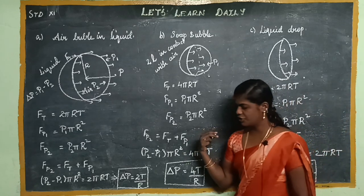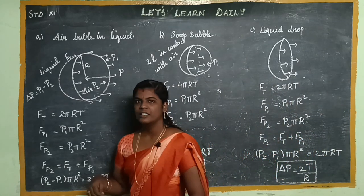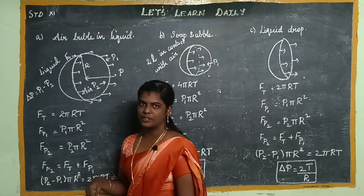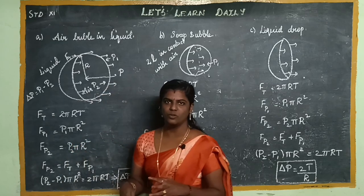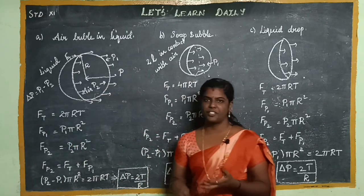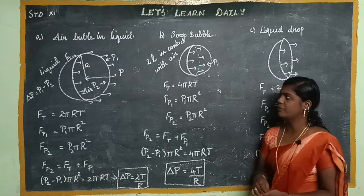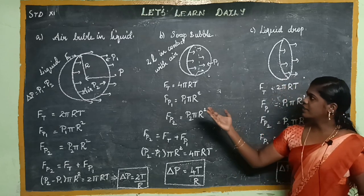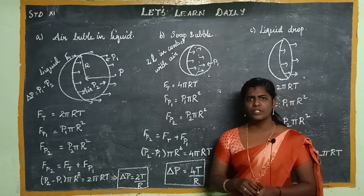So, where is excess pressure? That is the pressure change inside and outside. Excess pressure is the difference between the pressure inside and outside a surface. First, let's consider an air bubble in liquid.